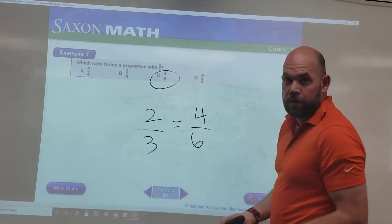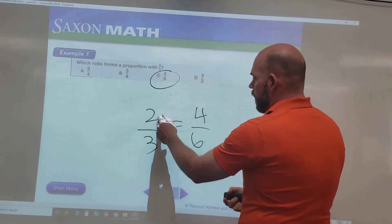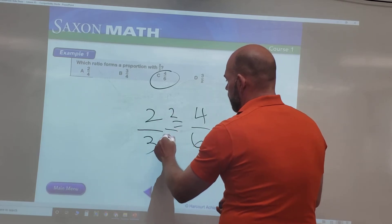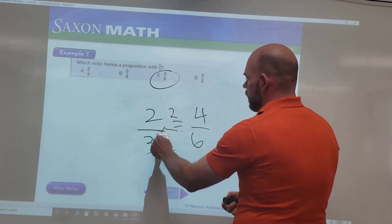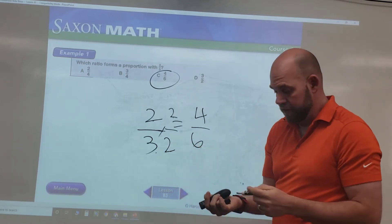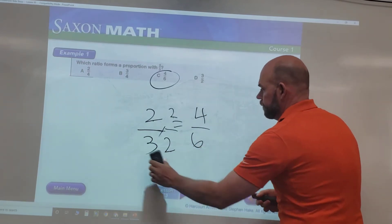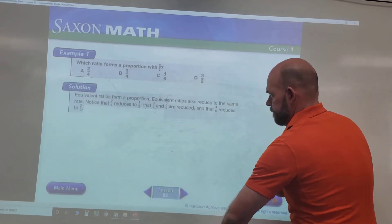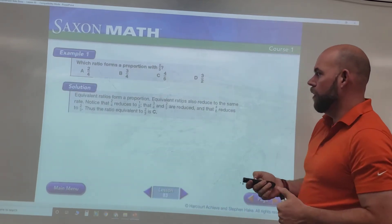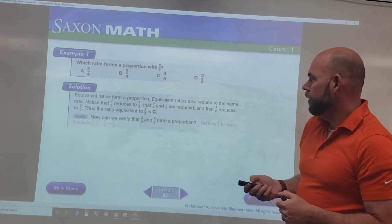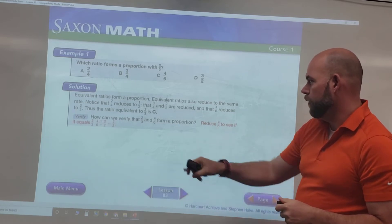So we could write that as two is to three equals four is to six, and we know that's true because if we reduce this it will go to two is to three. Or we could say two goes to four two times, and if we multiply it by two over two, then two times two is four, three times two is six, so it checks out. So here our equivalent ratio is C.